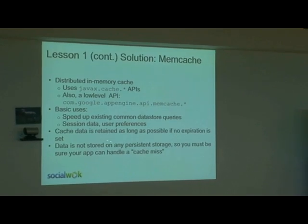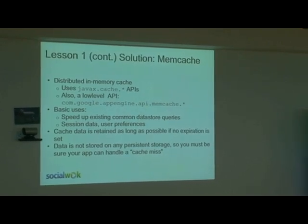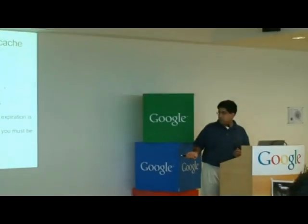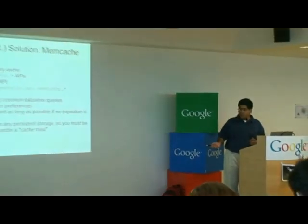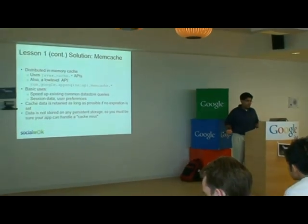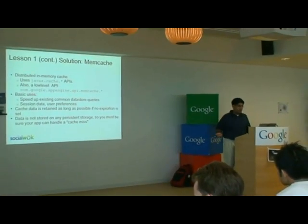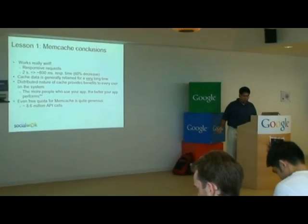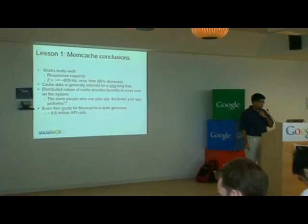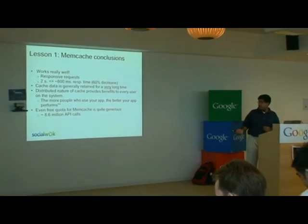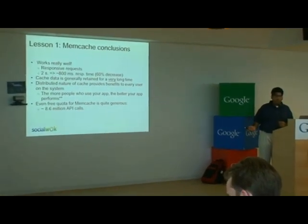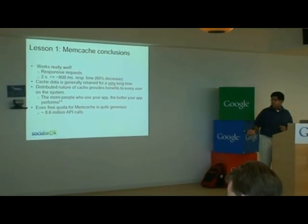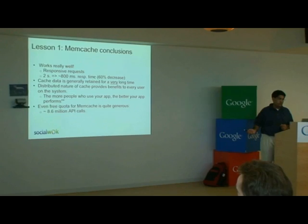The cache data is retained as long as possible if no expiration is set. It is not persistent, so at any time you might not get this data — sometimes it might miss, so you still need to handle that. But from our use, the results are pretty dramatic. We were able to reduce one of our requests from two seconds to around 800 milliseconds — about a 60% decrease in response time. This is very, very good.